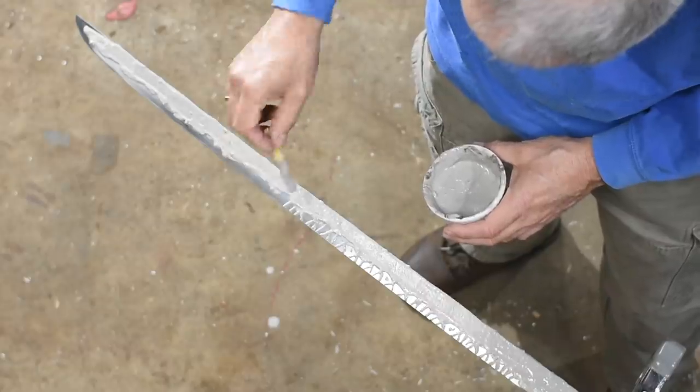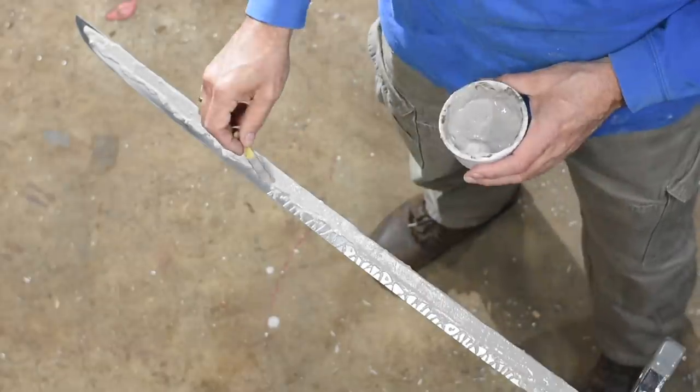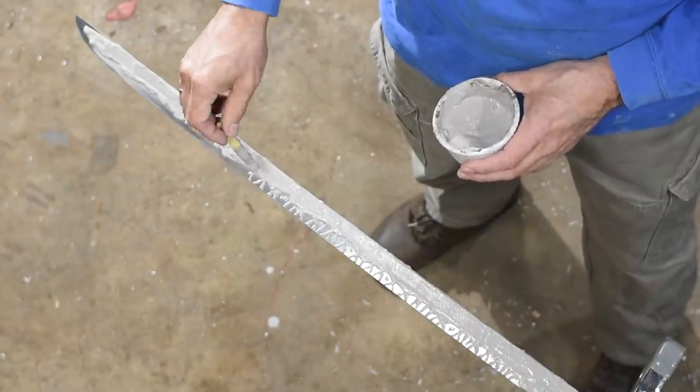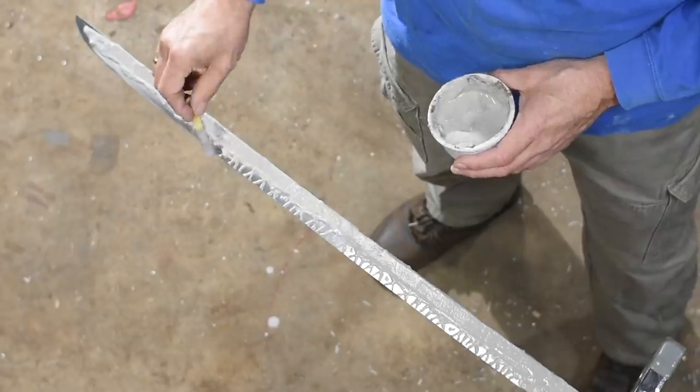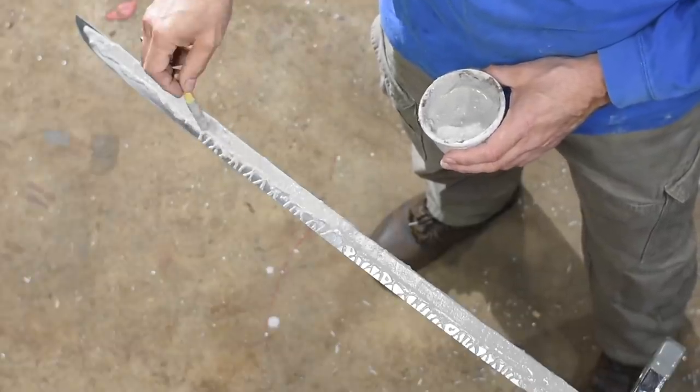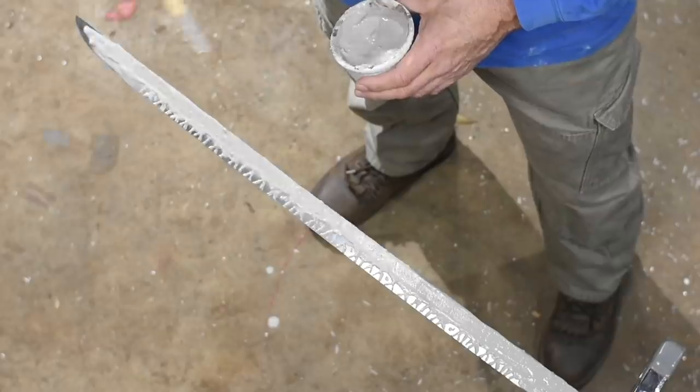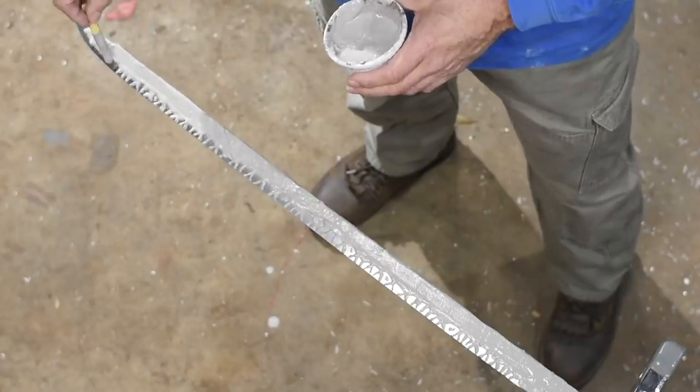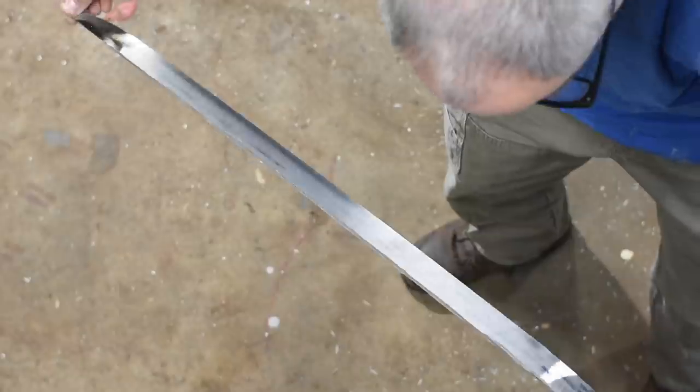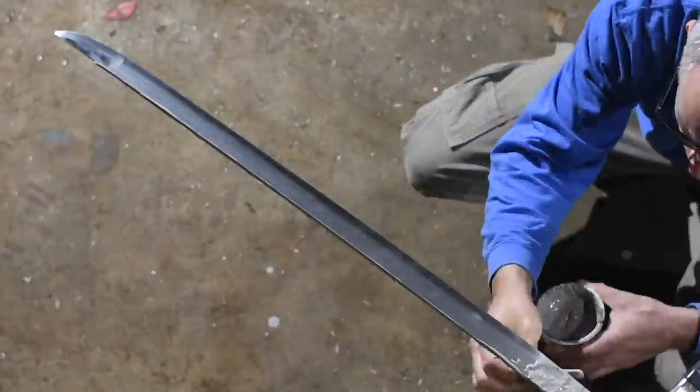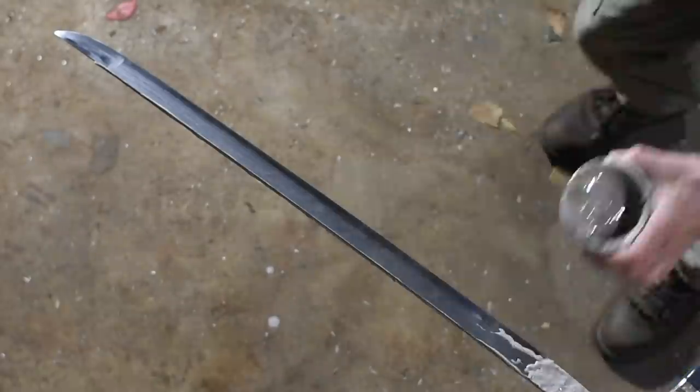The result: hard martensitic edge, soft pearlitic spine. The zone between the hard and soft areas shows up after polishing as a bright white line known as a hamon, one of the distinctive features of the Japanese sword. On the way to developing this technique, Japanese smiths also developed unique hamon designs that served as signatures of a particular school, particular regions, particular sword makers.